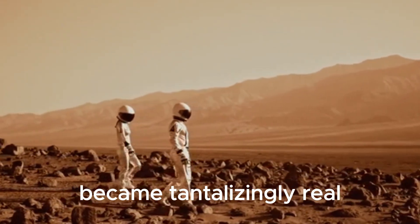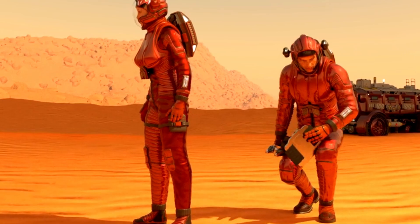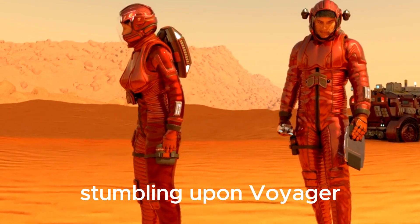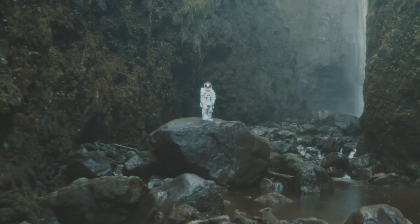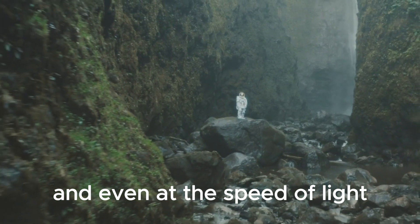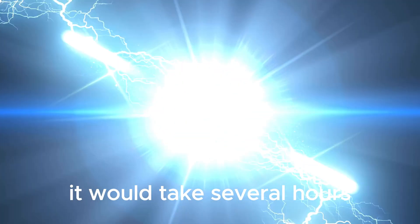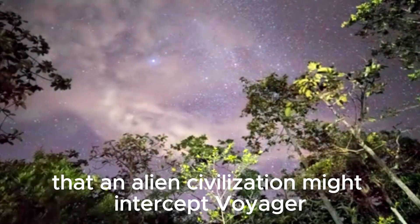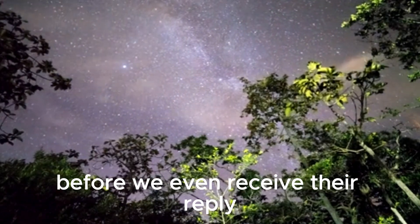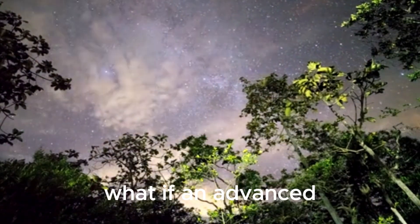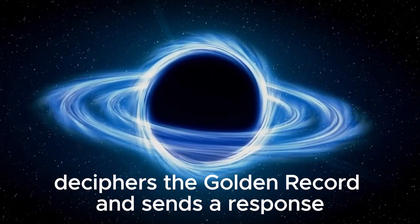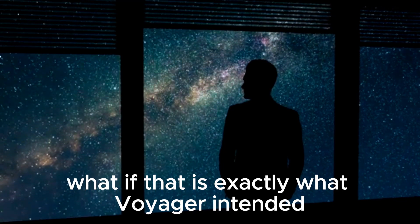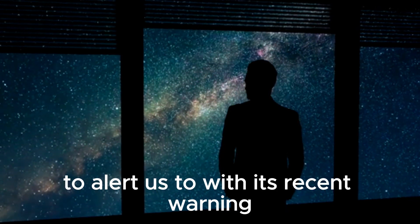As Voyager ventured forth, the possibilities of an encounter became tantalizingly real. While the chances of an alien civilization stumbling upon Voyager in the vast expanse of interstellar space were slim, they were not negligible. Space is spectacularly vast, and even at the speed of light it would take several hours for a signal to reach Voyager from Earth. Therefore, it's plausible that an alien civilization might intercept Voyager before we even receive their reply. What if an advanced extraterrestrial civilization finds Voyager, deciphers the Golden Record, and sends a response? What if that is exactly what Voyager intended to alert us to with its recent warning?